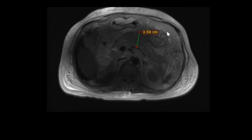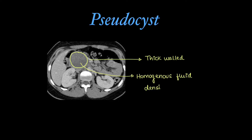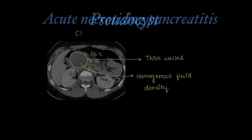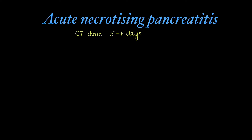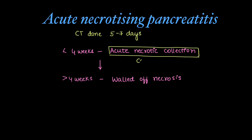Moving on to pseudocyst of the pancreas: there will be a thick-walled, homogeneously appearing fluid density cyst. Next is acute necrotizing pancreatitis, where CT done within 5–7 days shows necrosis very well. Within 4 weeks it is called acute necrotic collection, and after 4 weeks it is called walled-off necrosis.